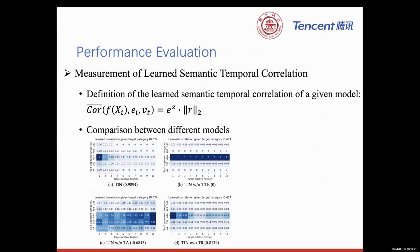We visualize the learned correlation of TRN and found that it can capture the semantic and temporal correlation accurately. Removing any of its three components makes it unable to capture such correlation. This verifies the necessity of each component.